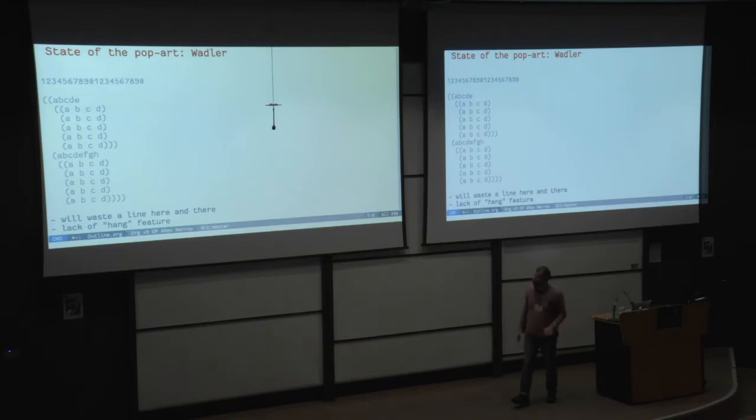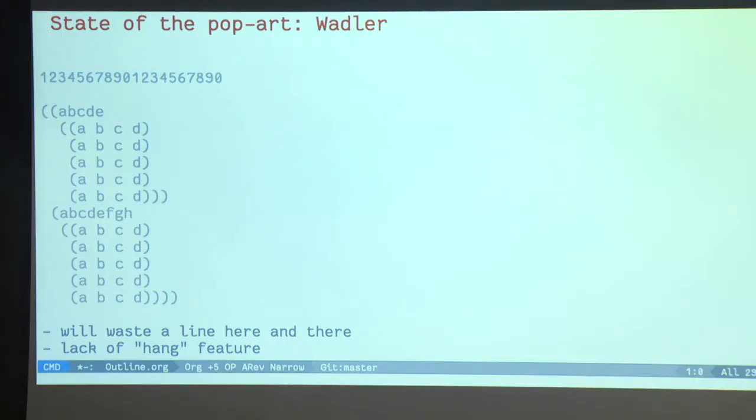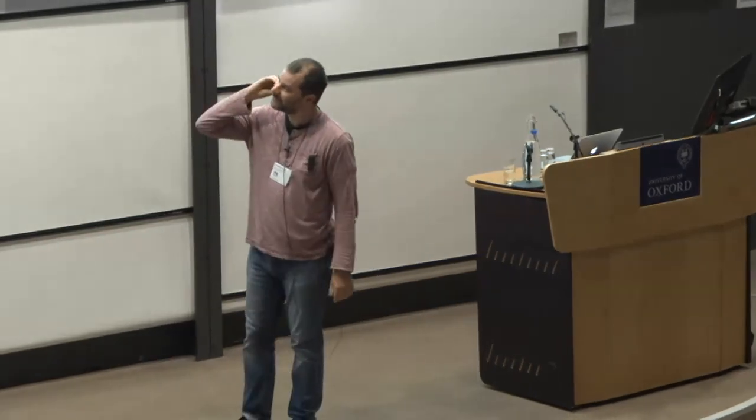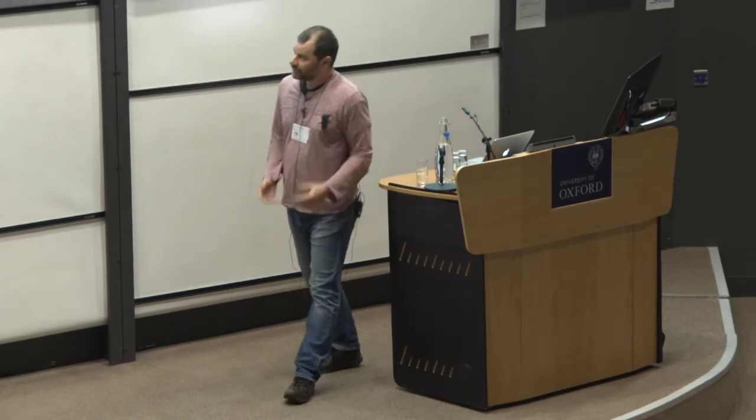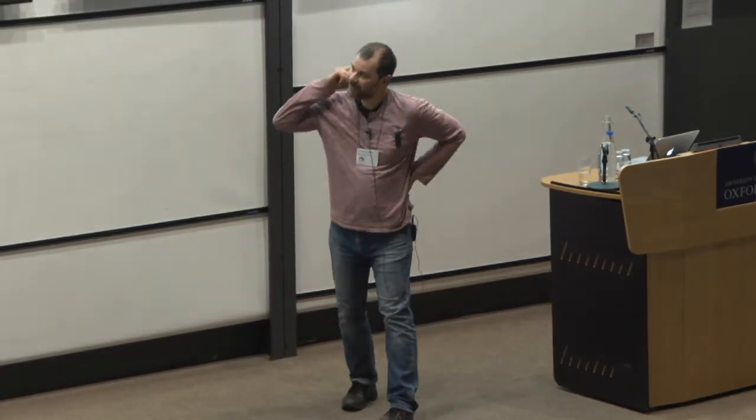Phil Wadler came up with a prettier printer. His solution works well in this case, but here we waste one line, if you see, because there is actually enough space to put the thing here. But with his library, you cannot express this construction. You cannot put a document on the right hand side of another document. You can only have constant amounts of indentation. So again, I kept searching and I didn't find anything. I had to write my own library. And so here am I.